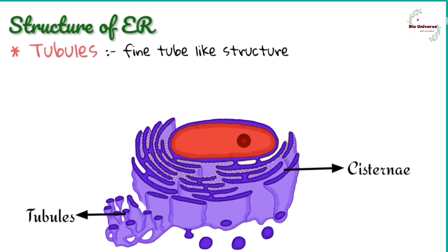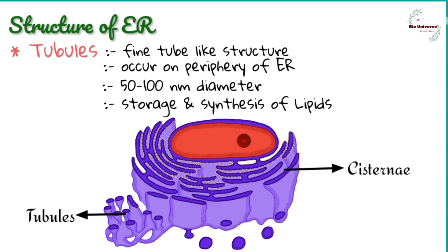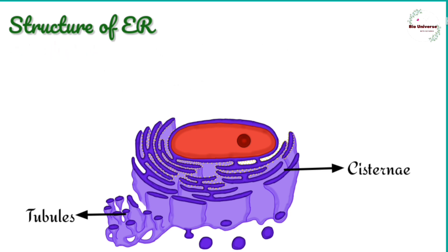Tubules: they are fine tube-like extensions of the endoplasmic reticulum. They occur on the periphery of the endoplasmic reticulum and are 50 to 100 nanometers in diameter. They can be regular or irregular, branched or unbranched, and are used for storage and synthesis of lipids.